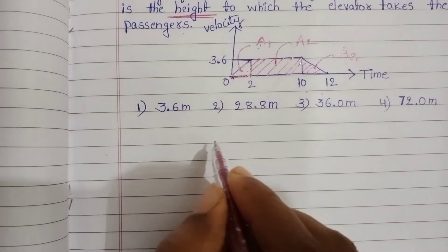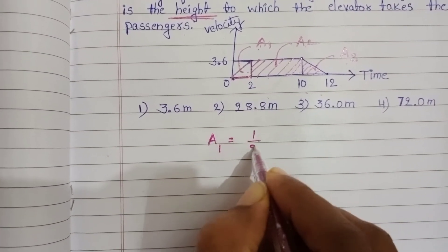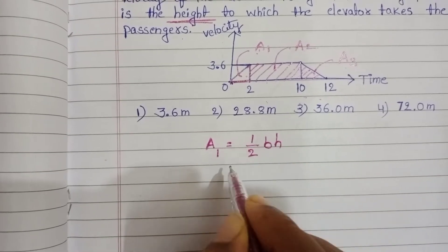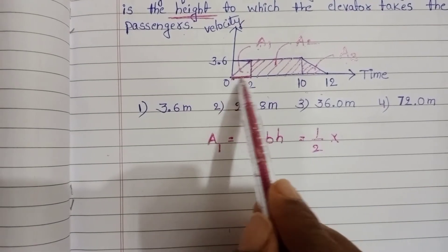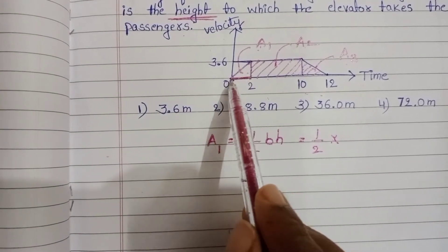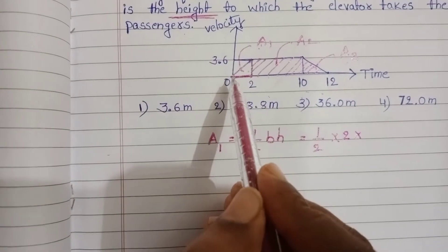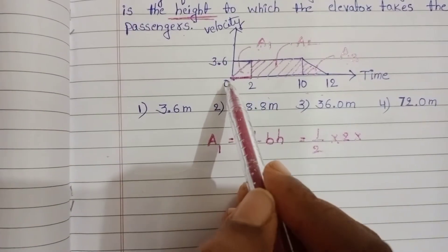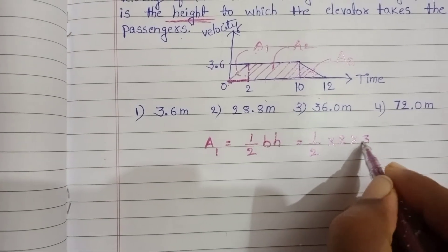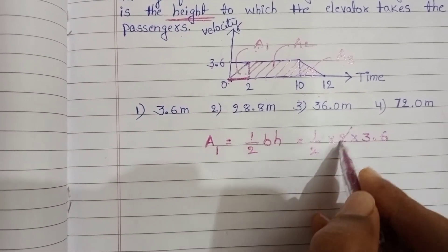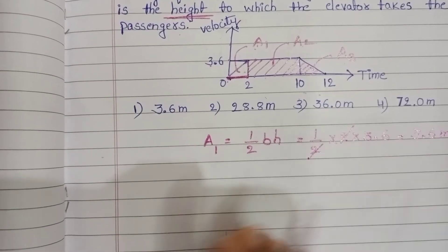First find out A1. A1 equals half base into height. Here base is the time axis, 0 to 2 seconds. So half into 2 into height, which is velocity axis 0 to 3.6 meters per second, into 3.6. Two gets cancelled, that equals 3.6 meters.